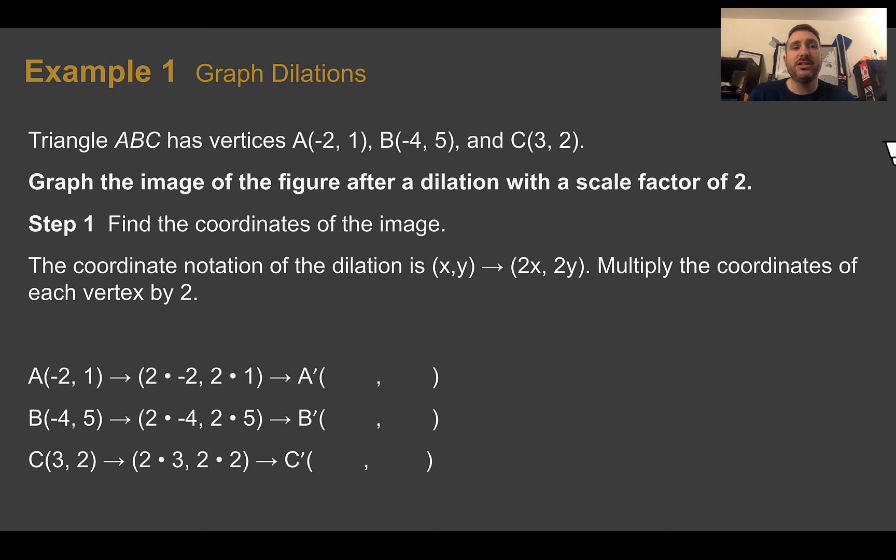Example 1, graph dilations. Triangle ABC has vertices of A at negative 2, 1, B at negative 4, 5, and C at 3, 2. We want to graph the image after a dilation with a scale factor of 2. So first, let's find the coordinates of our image. We know that it's a scale factor of 2, so we're going to multiply each coordinate by 2.